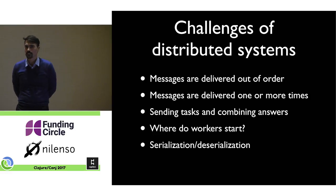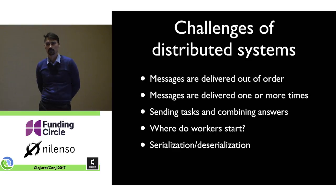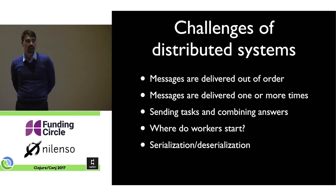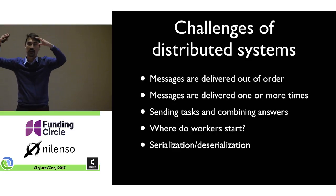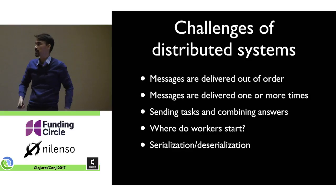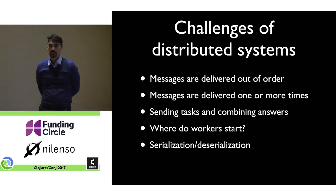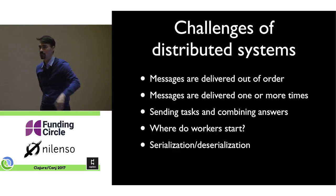Here's another thing. Here's some challenges of distributed systems that we all face when we start spreading our work over multiple machines. Messages are delivered out of order. Well, if we just had something where order doesn't matter, that's okay. Messages are delivered one or more times. Well, if we just had something where duplicates didn't matter, now that's okay. Sending tasks and combining answers. Well, if we had everything we needed for the task to be done bundled together in the whole value, we could just send it. And then we know that however it gets grouped in the Hadoop cluster and like recombined, it's okay. Because we can combine it back together and get the same answer. Where do you start when you're starting some work? Well, you start at the identity value. And then serialization, deserialization. We need to be able to turn it into something that we can send and then turn it back into data we can use.